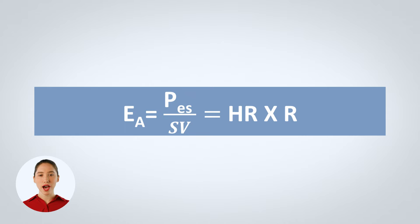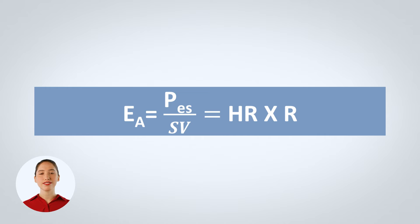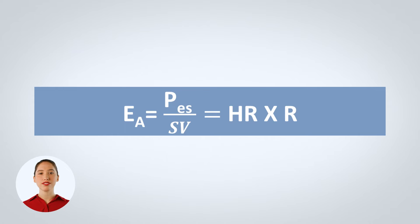As we learned in a previous video, here is the equation for arterial elastance. Arterial elastance equals the end systolic pressure (ESP) divided by stroke volume (SV). It is also heart rate times resistance.